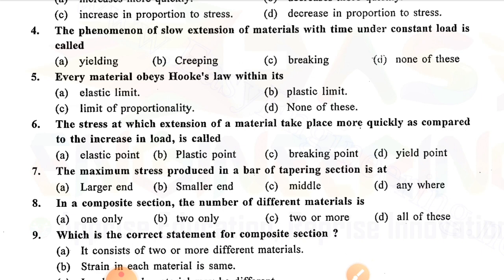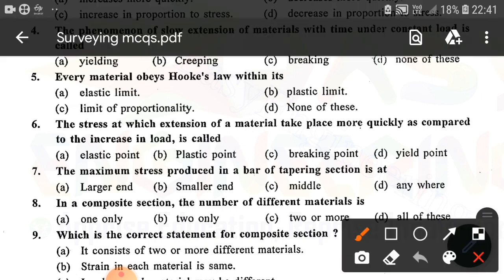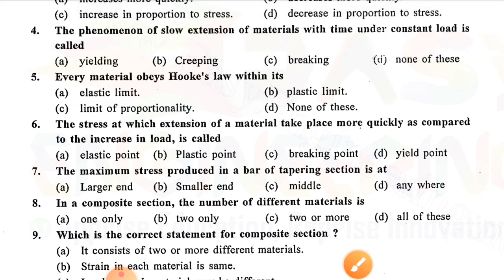Question number six: The stress at which extension of material takes place more quickly as compared to the increase in load is called — option D is correct — yield point. Question number seven: The maximum stress produced in a bar of tapering section is at — option B is correct — the smaller end. Question number eight: In a composite section, the number of different materials is — option C is correct — two or more.